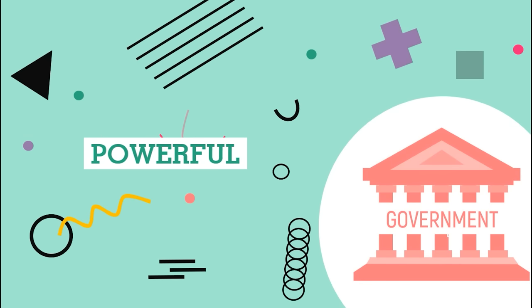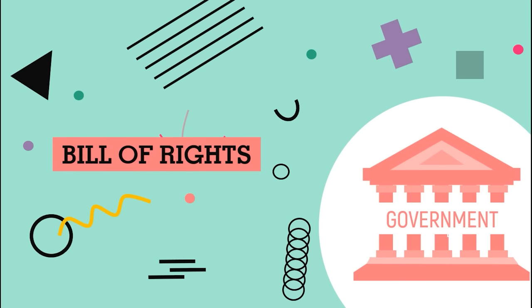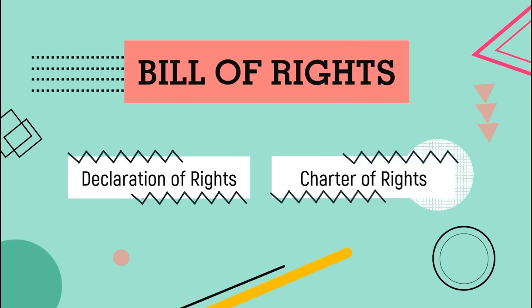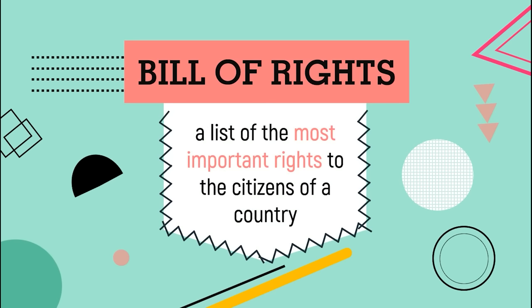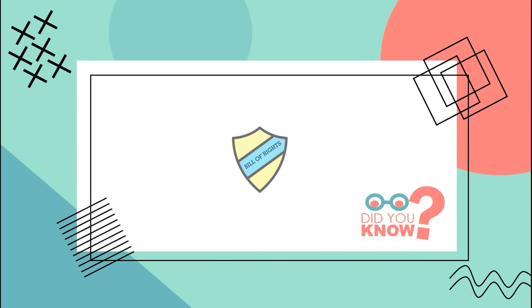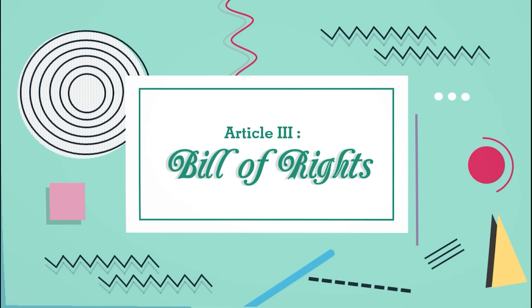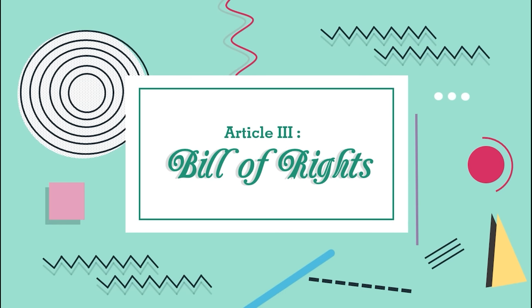The government is too powerful. One way to limit their power is through the Bill of Rights, sometimes called the Declaration of Rights or the Charter of Rights. It lists the most important rights of the citizens of a country. The Bill of Rights serves as our protection against violations from the government and any individual. That is why it's important for us to study the third article of the 1987 Philippine Constitution, also known as the Bill of Rights.